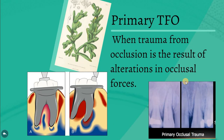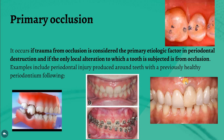In primary trauma from occlusion, the trauma results from alteration in occlusal forces. Primary trauma from occlusion is considered the primary etiologic factor in periodontal destruction, and the only local alteration to which the tooth is subjected is from the occlusion. Examples include periodontal injury around teeth with a previously healthy periodontium — such as insertion of a high filling, where the only cause of trauma from occlusion is the filling itself, while the teeth and periodontium are normal.